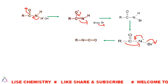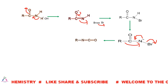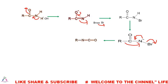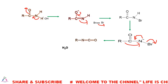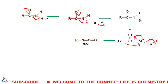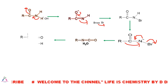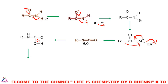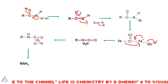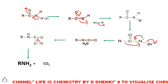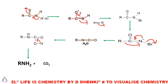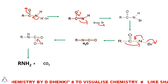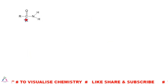The N-bromide compound undergoes the key step involving intramolecular and concerted rearrangement of the R group. After this, an isocyanate intermediate is formed. This isocyanate is then attacked by water at the carbonyl carbon, and after hydrolysis it forms the primary amine and carbon dioxide as the ultimate products.